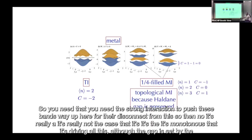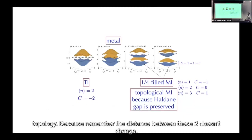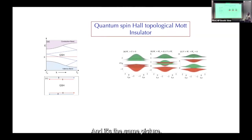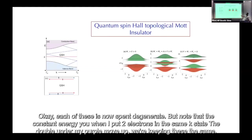You need strong interactions to push the doubly occupied bands way up so they're disconnected. Then it's Mottness that's driving everything, although the gap is set by the topology because the distance between the singly occupied bands doesn't change. We can do the same thing with Kane-Mele or BHZ models — same picture.